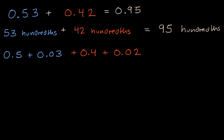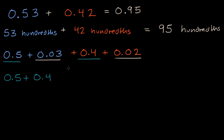Then we could have separately added the tenths and the hundredths. So you have five-tenths plus four-tenths. And then you could separately add three-hundredths plus two-hundredths.